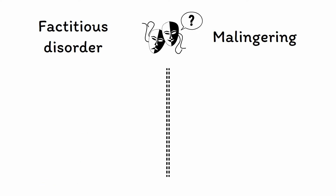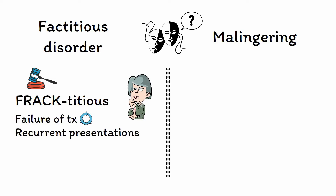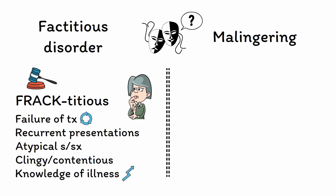A definitive diagnosis of factitious disorder requires clear evidence that the patient is intentionally fabricating their symptoms. However, this cannot always be found, so cases of factitious disorder often end up suspected rather than confirmed. You can use the mnemonic FRACTITIOUS to remember some key patterns suggestive of this disorder, including repeat failure of treatments that are generally effective in most cases, recurrent presentations for medical evaluation — especially if it involves many different hospitals and clinics — atypical signs and symptoms that don't match the known pathology of the disorder, clingy or contentious interactions where the patient appears to enjoy being in the sick role or becomes hostile when discussing discharge, and finally when the patient appears to have a knowledge of their reported illness that goes far beyond what's typical for most patients.